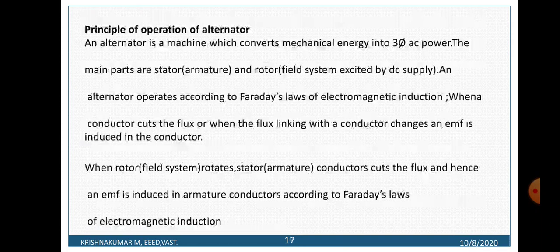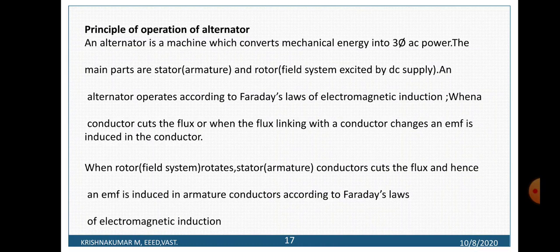Principle of operation of an alternator: An alternator is a machine which converts mechanical energy into electrical energy. The main parts are stator and rotor. The stator consists of armature winding and the rotor consists of field winding, which should be excited by a DC supply. An alternator operates according to Faraday's law of electromagnetic induction. When the field winding is excited from a DC supply, it creates flux. That flux passes through the air gap and cuts the armature winding, and an EMF is induced in the armature according to Faraday's first law of electromagnetic induction.